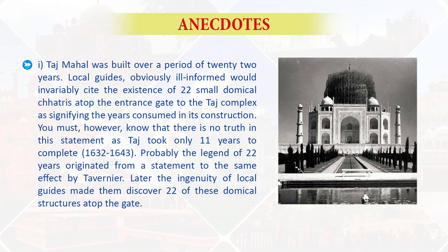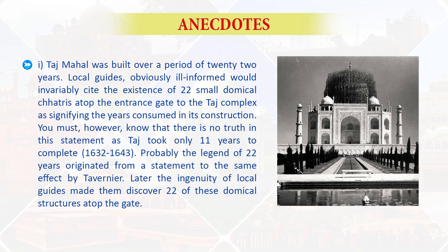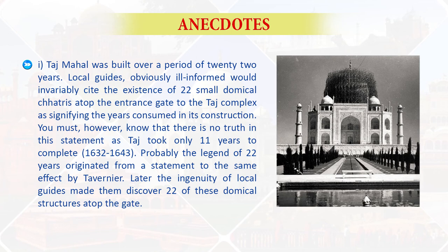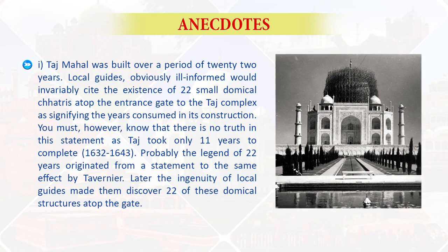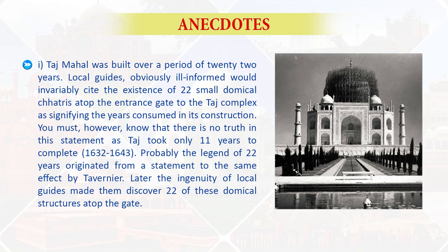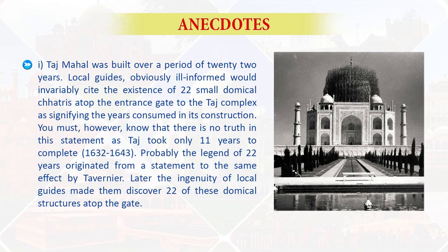There are also lots of anecdotes associated with the Taj. Taj Mahal has given birth to more anecdotal stories than any other monument in India. Such stories do not obviously become part of the repertoire of history, yet they possess a spicy effect and may be used as fables. The first is that the Taj Mahal was built over a period of 22 years. Local guides, obviously uninformed, would invariably cite the existence of 22 small domical chhatris atop the entrance gate to the Taj complex as signifying the years consumed in its construction. You must know, however, that there is no truth in this statement, as the Taj took only 11 years to complete, between 1632 and 1643. Probably the legend of 22 years originated from a statement to the same effect by Tavernier, and later the ingenuity of local guides made them discover 22 of these domical structures atop the gate.